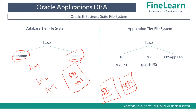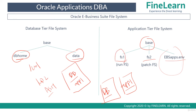So there is no mandatory defined structure for the database tier file system. When it comes to the application tier file system, there is a base directory where you install the entire file system. In the base directory you'll have three important items: FS1 (file system 1), FS2 (file system 2), and ebaseapps.env. The ebaseapps.env is an environment file to set the environment, and when you run it, it sets the environment to administer or navigate through the file system.